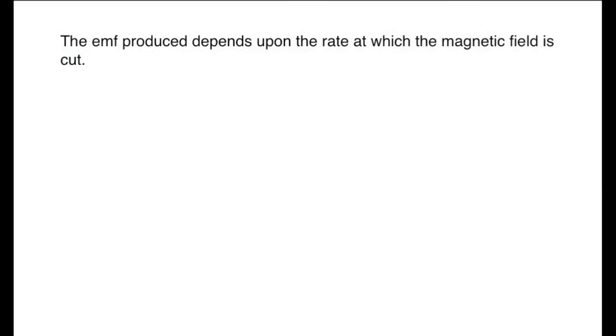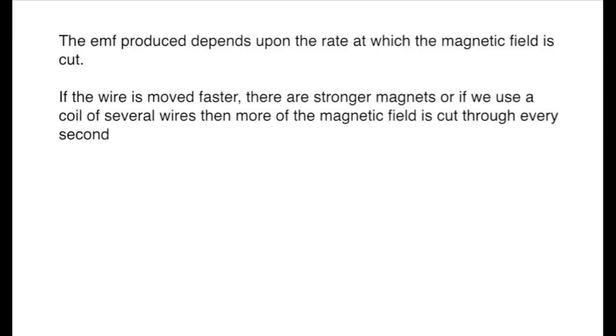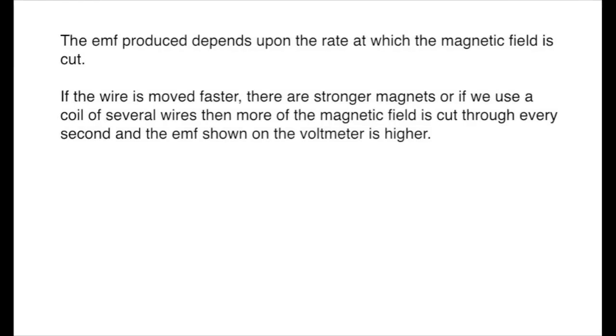The voltage produced depends upon the rate at which the magnetic field is being cut. If we move the wire faster, use stronger magnets, or use several turns of wire in the form of a coil, then the voltage is higher.